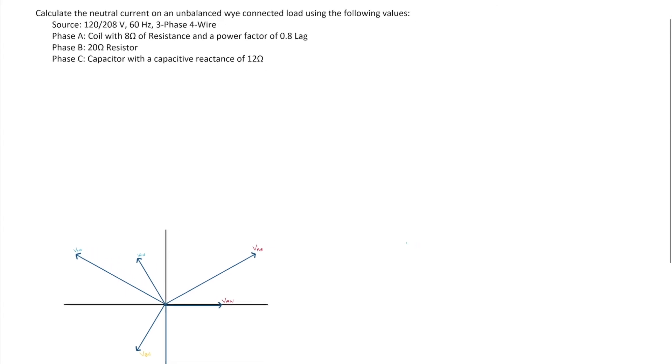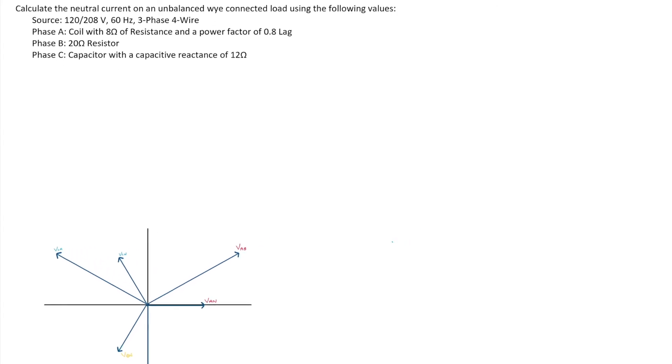So now what I want to do is I'm actually going to draw my source or my load and we'll calculate from there. So let's do this. Let's go phase A was a coil. Phase B was a resistor. And phase C was a capacitor like that.